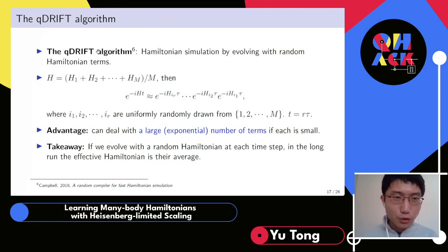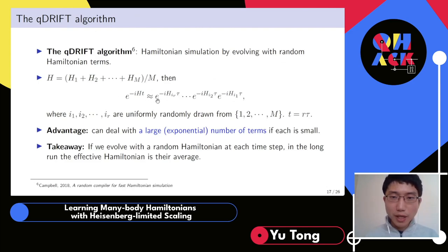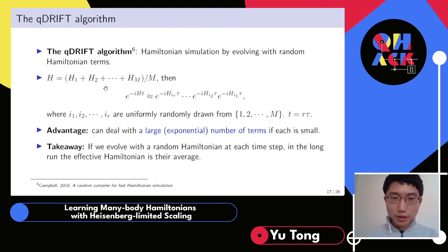Question about slide 17: is this the same process as Trotterization, or do the Hamiltonians need to commute? Q-drift is not the same as Trotterization. In Trotterization you apply all terms in sequence — h1, then h2, all the way to hm, then repeat — so the cost scales at least linearly with the number of terms. In Q-drift, at each time step you randomly draw a single term and apply it, so the cost can be independent of the number of terms. That is a key difference.